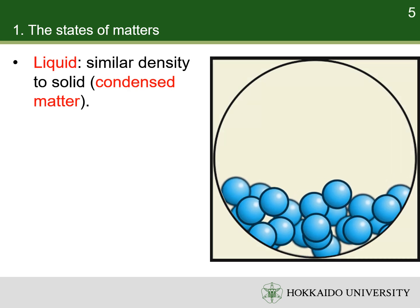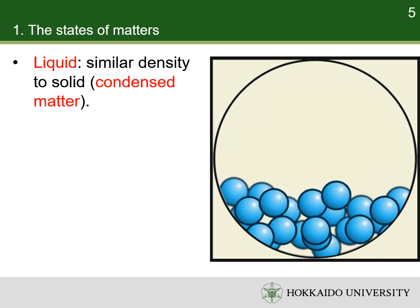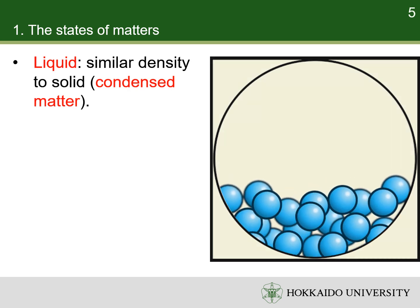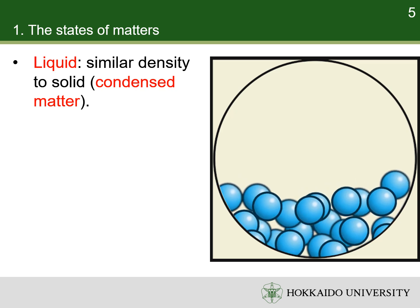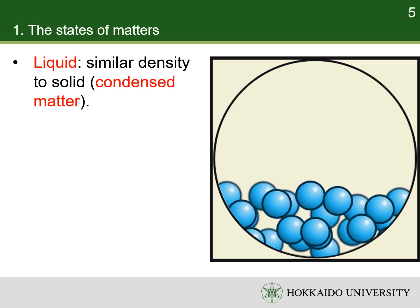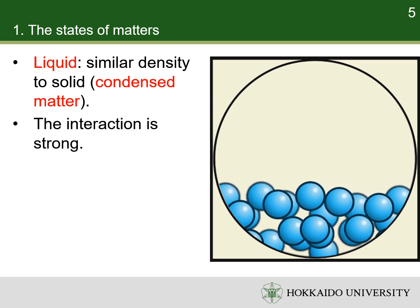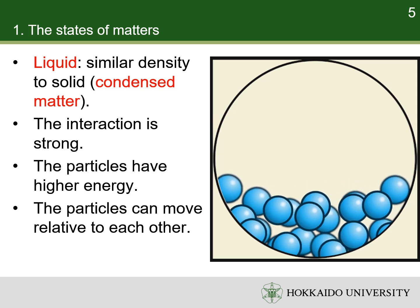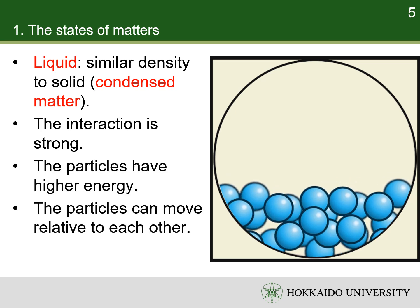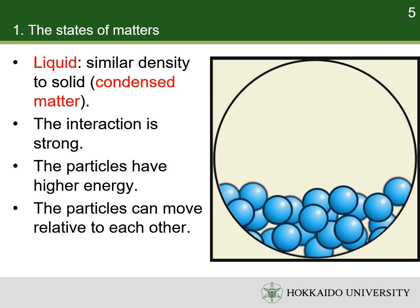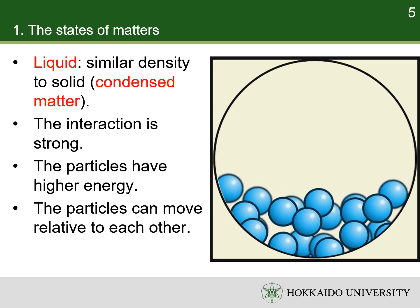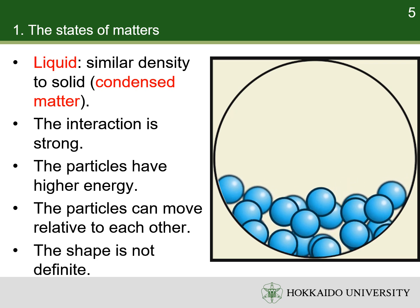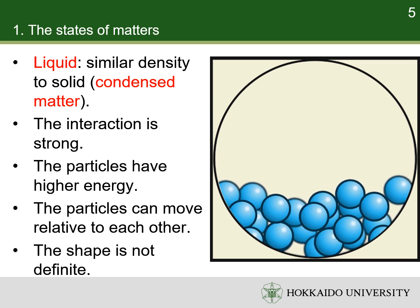The density of a liquid is usually close to that of a solid, and much higher than that of a gas. Therefore, liquid and solid are both termed condensed matter. Intermolecular forces in a liquid are still strong, but the molecules have enough energy to move relative to each other and the structure is mobile. This means that the shape of a liquid is not definite but is determined by its container.